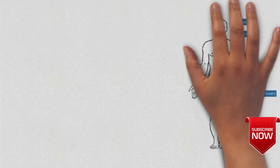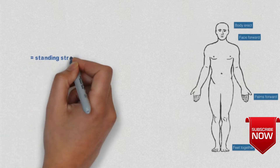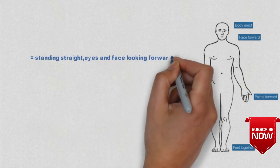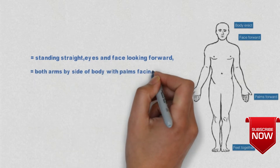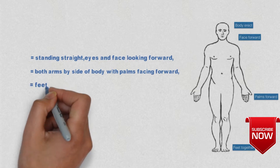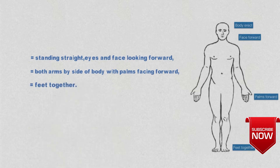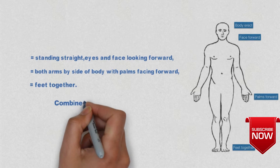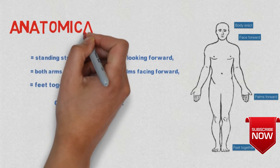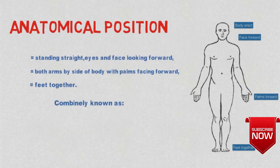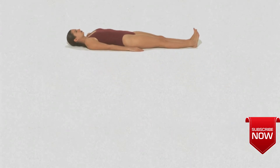In the first diagram, it refers to when a person is standing straight, eyes and face looking forward, both arms by the side of the body with palms facing forward, and feet together. This is commonly known as the anatomical position. This position is important in anatomy because it is the position of reference for anatomical nomenclature.